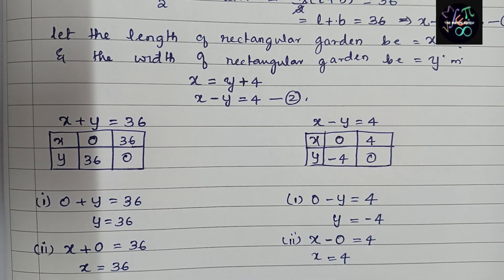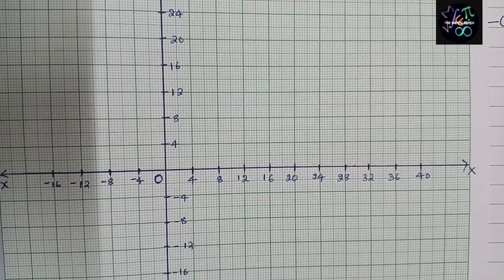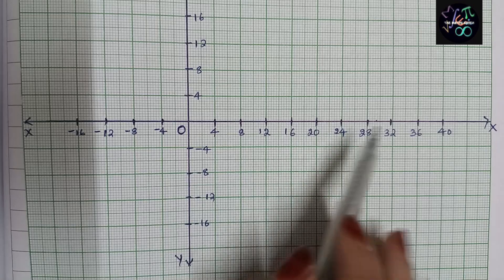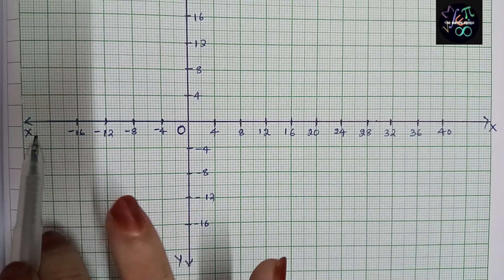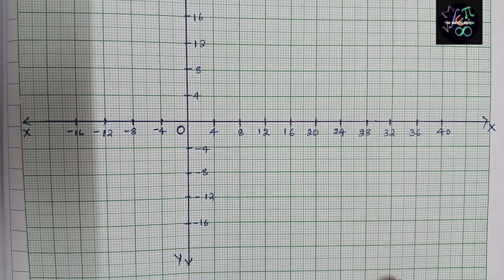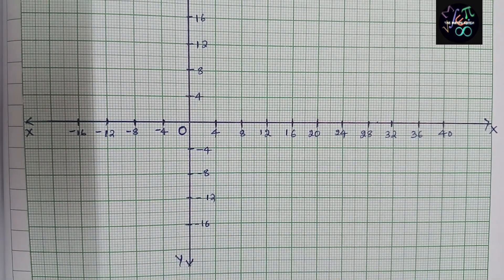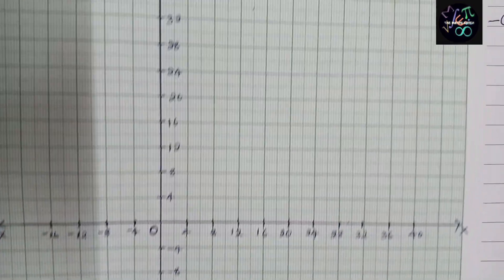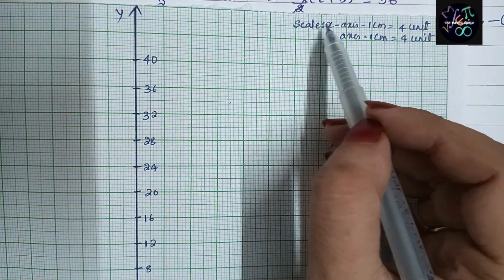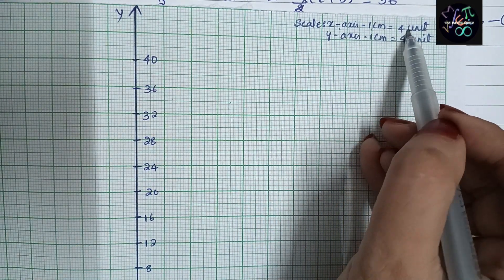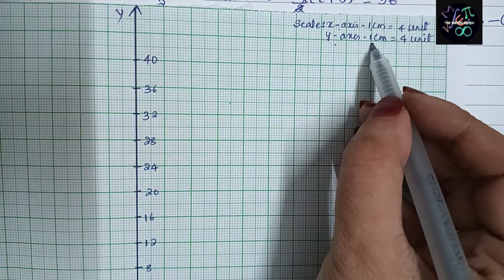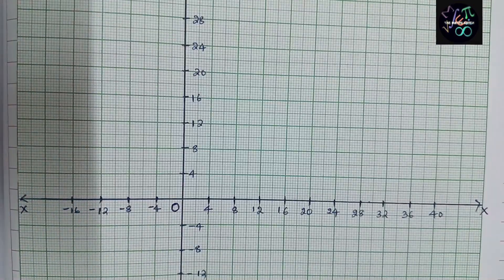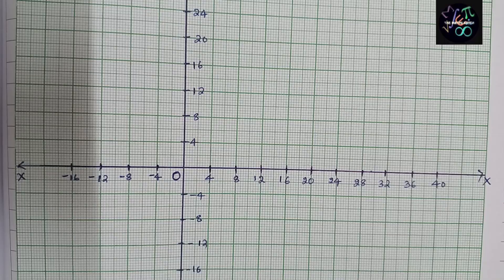Now let us plot the graph. I have taken a graph sheet. I have taken four tables — always we used to take 0, 1, 2, 3, 4, 5 — but here I have taken a bigger scale because we have large values like 36. The scale is: x-axis — 1 centimeter equals 4 units; y-axis — 1 centimeter equals 4 units. I have taken 4 units on both sides, negative and positive.